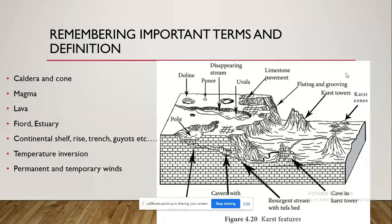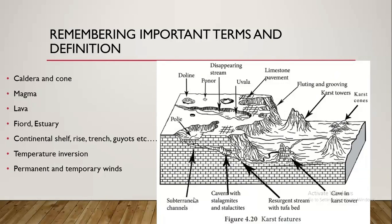For example, karst features are topographical features formed on limestone-based rocks because of chemical weathering. There are terms like doline, polje, uvala, cavern, karst cones, stalactite, and stalagmite — multiple keywords you may not have heard yet. You will be reading them for the first time, so these keywords are very important. That's why I'm focusing upon notes making and continuous revision, because questions will eventually come in the exam on the basis of these keywords.